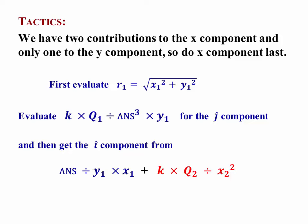And then just carry on, add k times q2 over x2 squared to include the x component from q2, which is the only contribution of q2 to the answer. So once I've done that, I'm done.